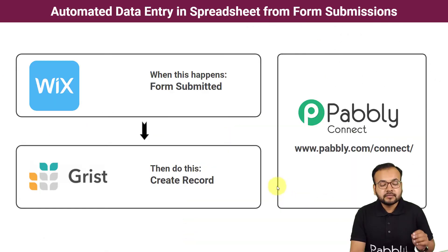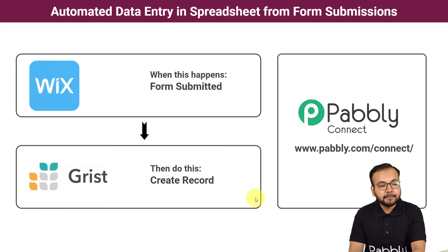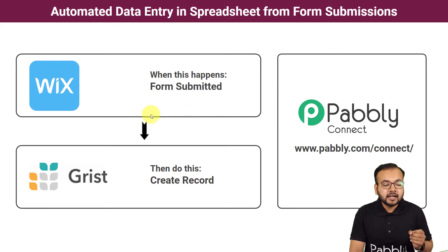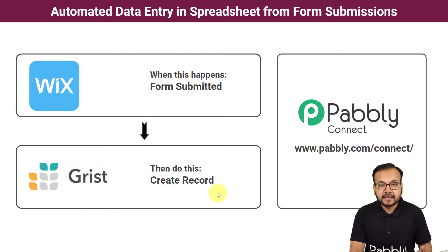This will be the flow of this automation. We have taken the example of Vix application to create a website form, and as and when any person fills this form, it will automatically create a record in Grist, which is a spreadsheet application. The data entered in the form will be added as a record in Grist.